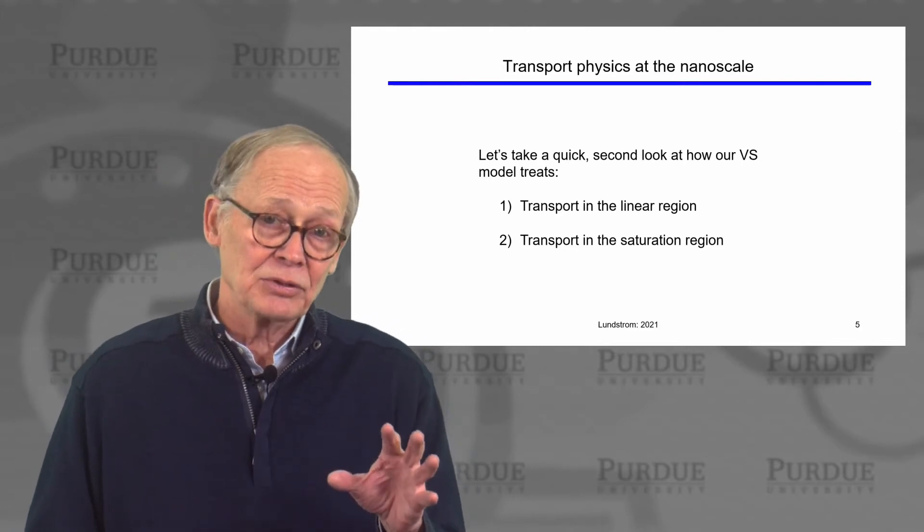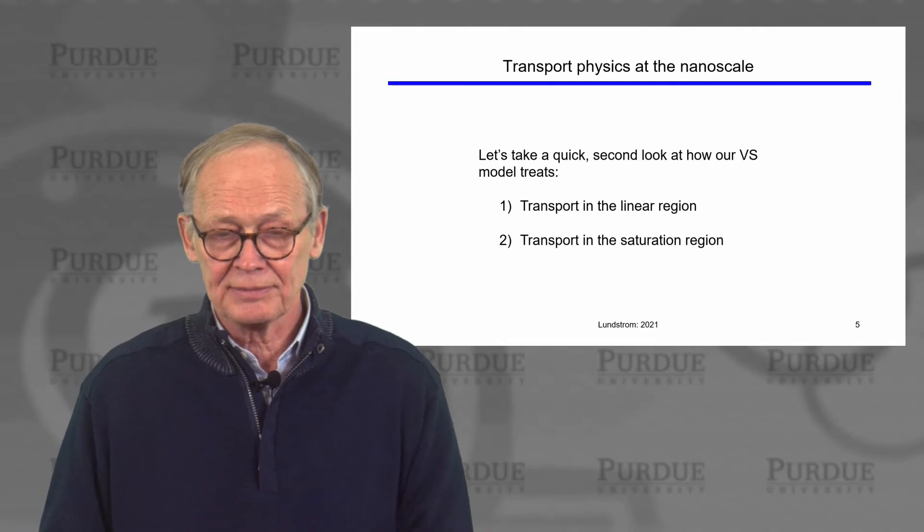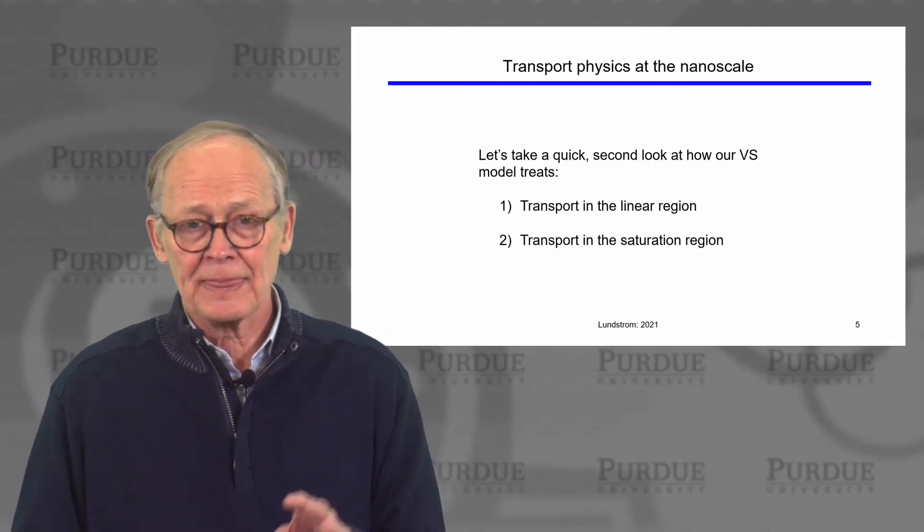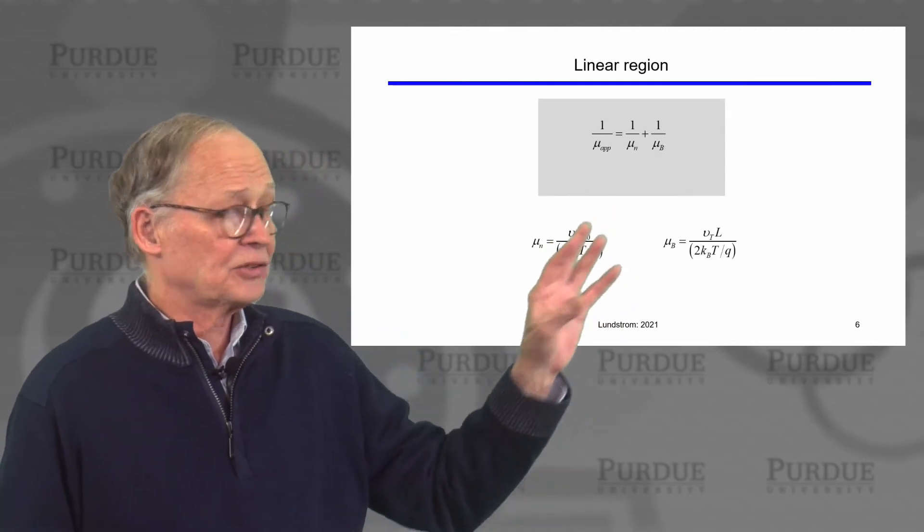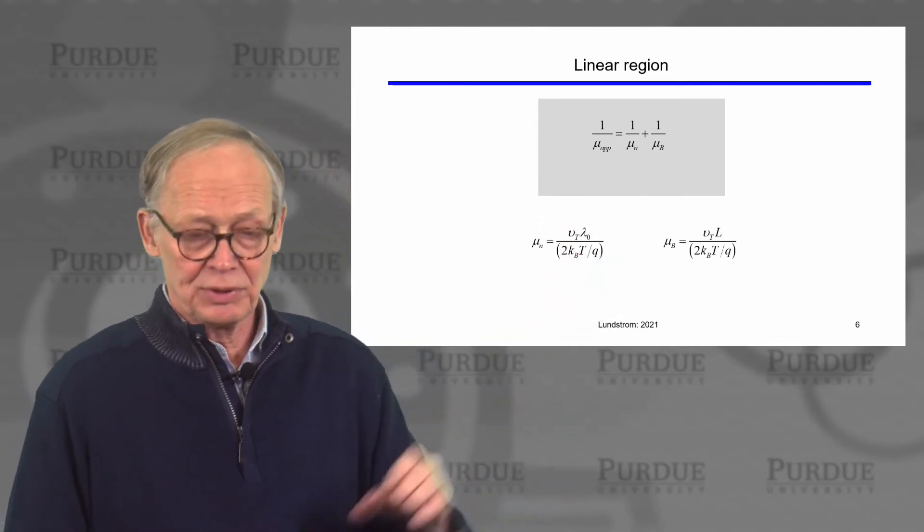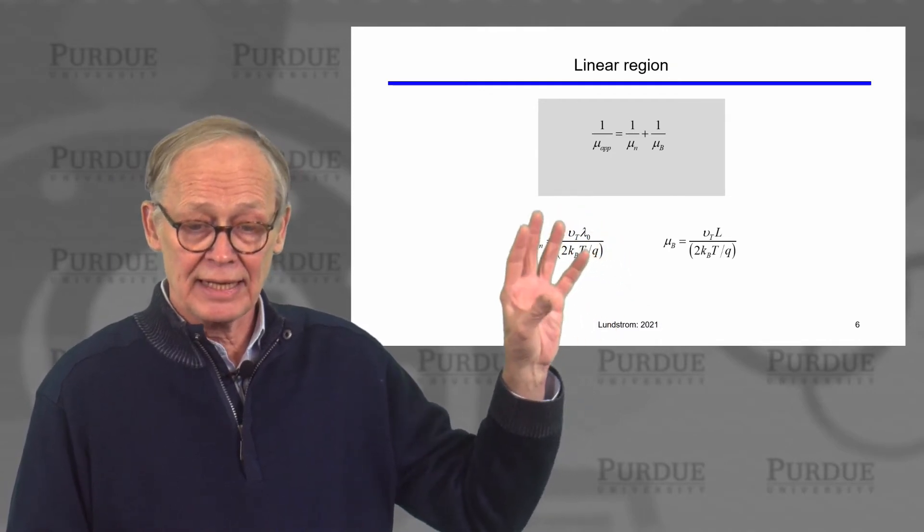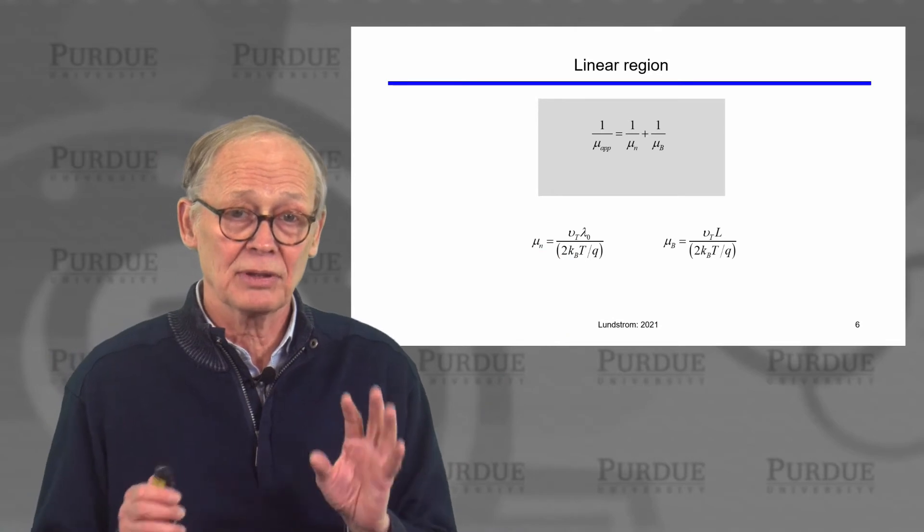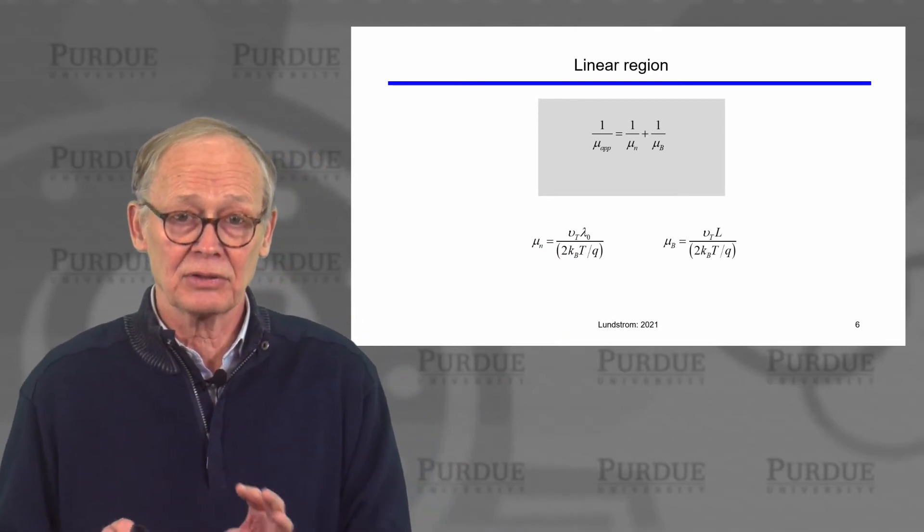What we're able to do now is to properly describe transport at the nanoscale. Let's take a very quick look at transport under low VDS and under high VDS conditions. Under low VDS conditions, we're describing transport through this apparent mobility. Apparent mobility is a combination of the scattering limited mobility and the ballistic mobility. Each of those is a well-developed, well-understood concept with clear physical significance.